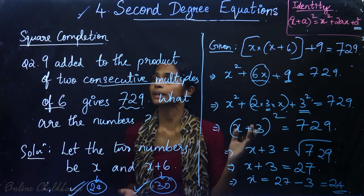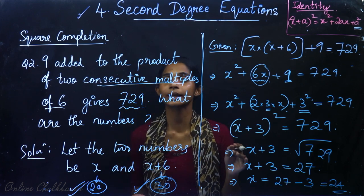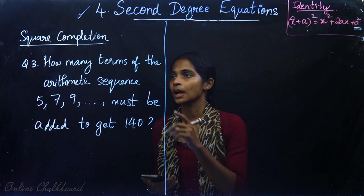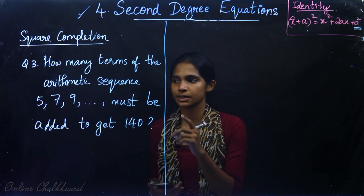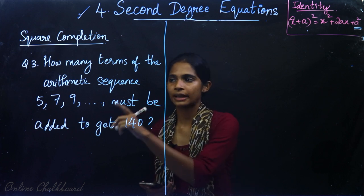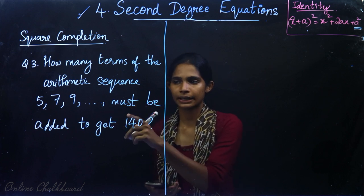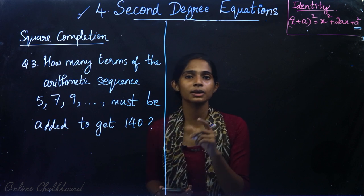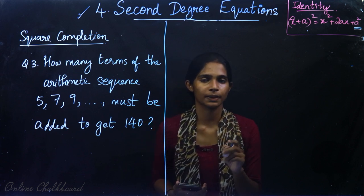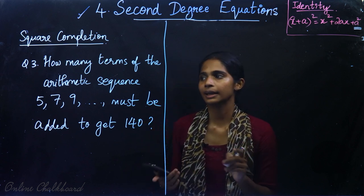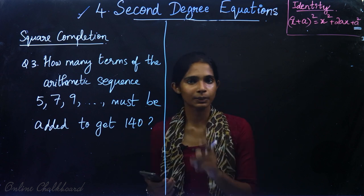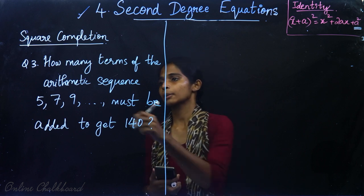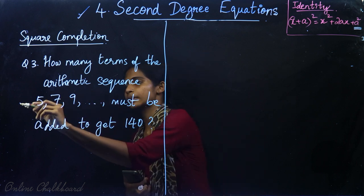Let's go to question number 3. Question number 3: How many terms of the arithmetic sequence 5, 7, 9 must be added to get 140? We will use the arithmetic sequence sum formula.